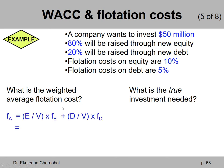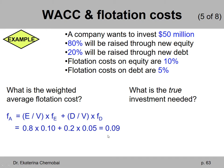To answer the first question, we need to use the weighted average flotation cost formula. Because we're only raising money from two sources — equity and debt — there is no preferred stock part in the formula. So we just have the weight of equity times the flotation cost of equity, plus the weight of debt times the flotation cost of debt. Plugging in the numbers: 0.8 times 0.10 plus 0.2 times 0.05, which gives 0.09, or a 9% overall flotation cost.